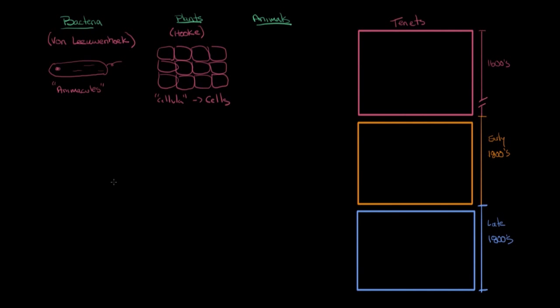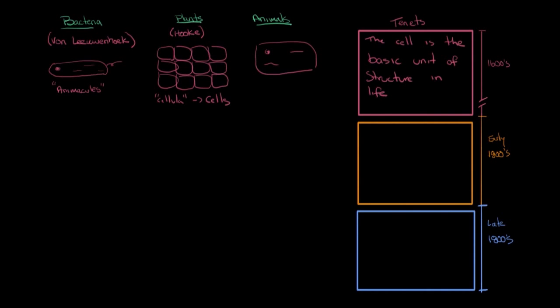Similarly, other scientists were looking at animal tissues, and they also noticed similar cells, as in bacteria and plants. From this, they developed the first tenet of cell theory: the cell is the basic unit of structure in life.